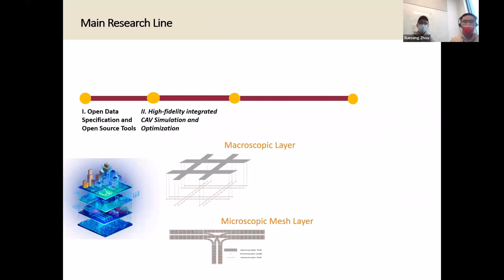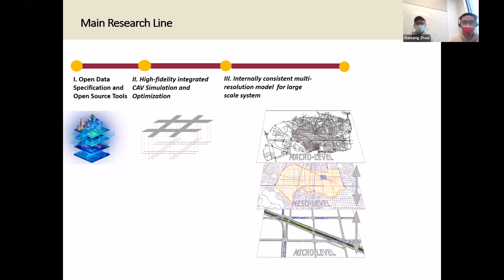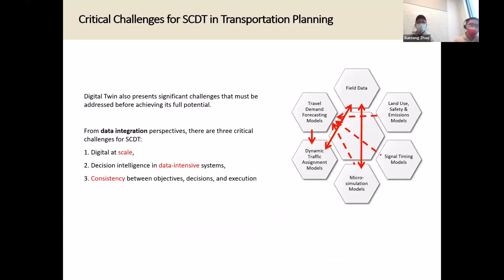Starting with the open data specification, we will show you we have different levels: micro-level, micro-cell-based mesh layer, and a mesoscale layer in the middle to show the connection from theoretical internal consistency and the way we link a very large-scale system all together. We have been doing this digital twin and simulation development for a number of years, which presents significant challenges. There are many components in our traditional systems: sensor data, static traffic planning model, dynamic traffic segment model, car-following based simulation, and signal optimization.